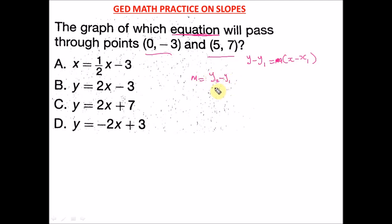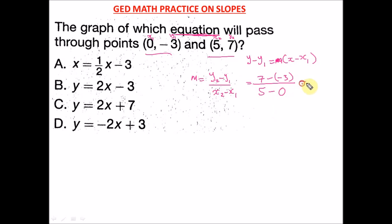The slope formula is m = (y₂ − y₁) / (x₂ − x₁). Label the points carefully: this is x₁, y₁ and this is x₂, y₂. So we have y₂ = 7, y₁ = −3, x₂ = 5, x₁ = 0. Opening up the parentheses: 7 − (−3) = 7 + 3 = 10, and 5 − 0 = 5. So our slope m = 10 / 5 = 2.